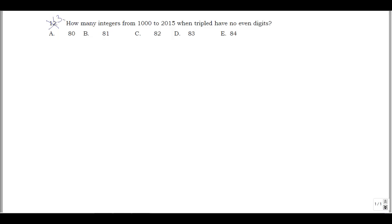The question is: how many integers from 1000 to 2015, when tripled, have no even digits? The way I'm going to attack this is by looking at those numbers all tripled. If we triple 1000, we get 3000. If we triple 2015, we get 6045. So really what I can do is find all numbers between 3000 and 6045 that are both multiples of 3 and have no even digits — translating the problem to that range.